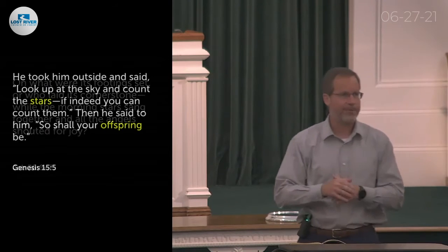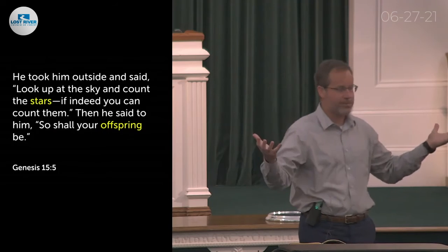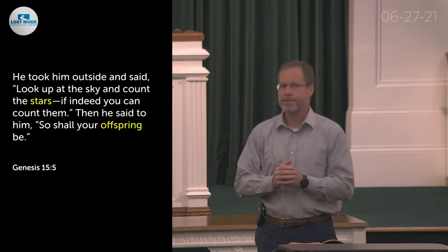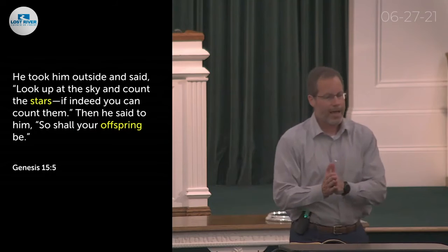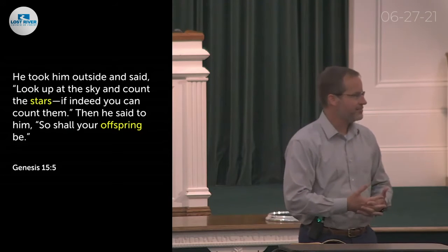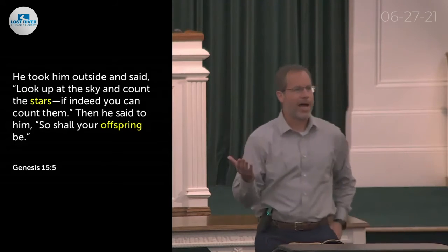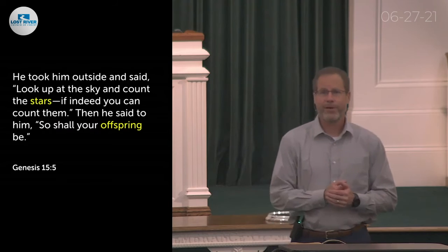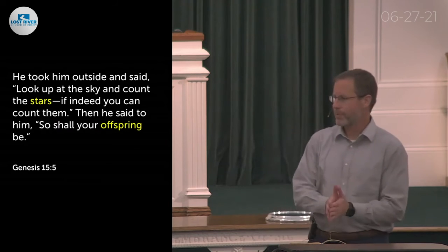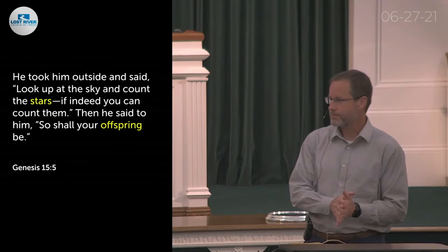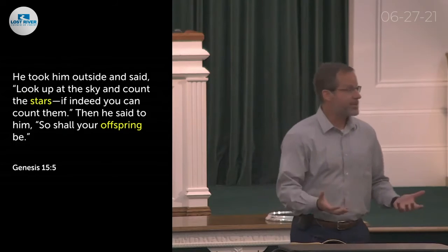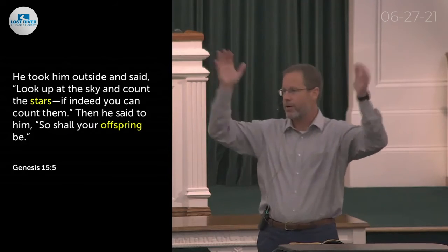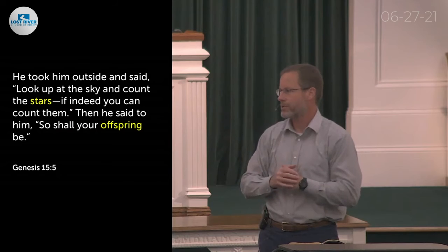Also in Genesis 15:5, we see not just angels but the human host that will one day be gathered around the throne of God. God took Abraham outside and said, 'Look up at the sky and count the stars — if you can count them. So shall your offspring be.' A promise is made to Abraham that his descendants will be as numerous and as exalted as the stars in the sky, countless as they are.